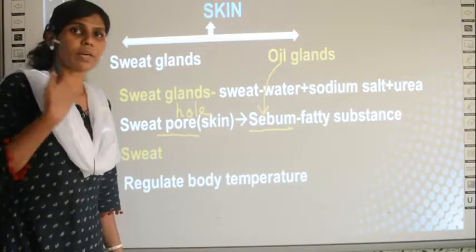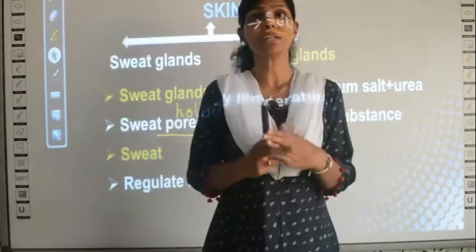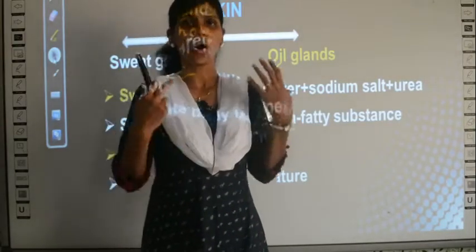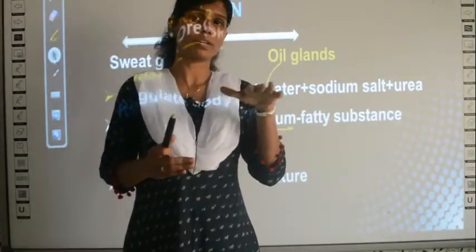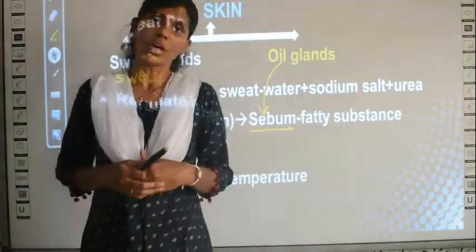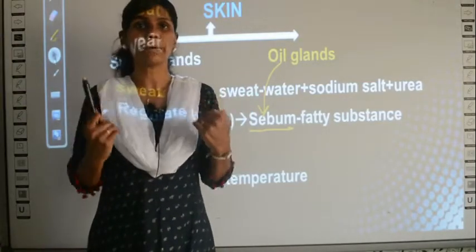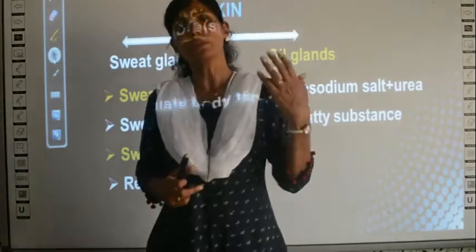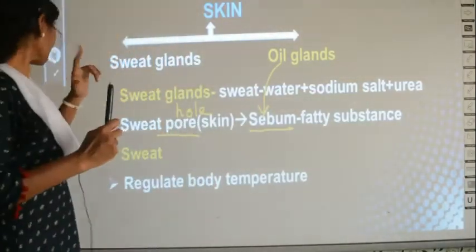The function of sweating is to regulate body temperature. When atmospheric temperature is high, your body becomes hot, and sweating is a regulatory mechanism that brings the body temperature down. When you sweat, the moisture cools your body, preventing your body temperature from rising as high as the environment's temperature.